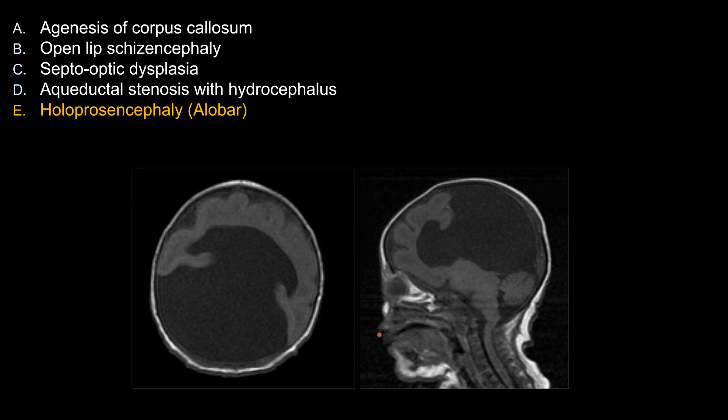For aqueductal stenosis, the enlargement of the ventricle here is not due to obstruction, so this is not obstructive hydrocephalus. Therefore, aqueductal stenosis with hydrocephalus is also not the correct answer in this case.